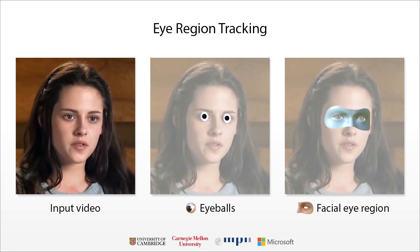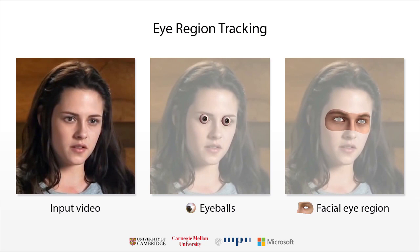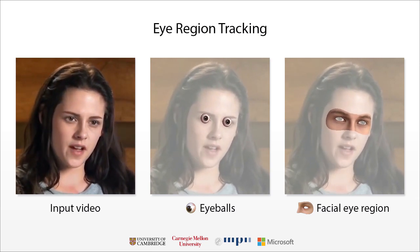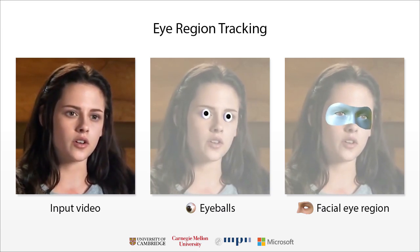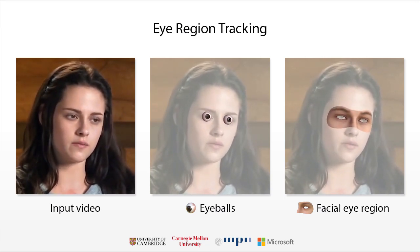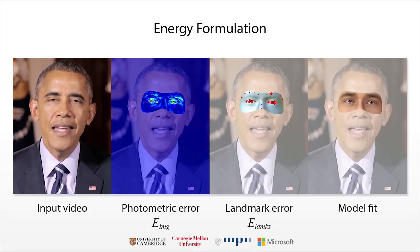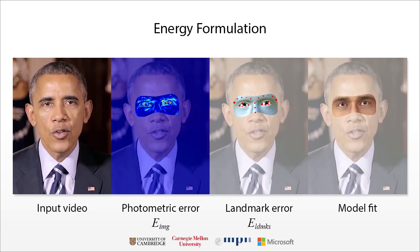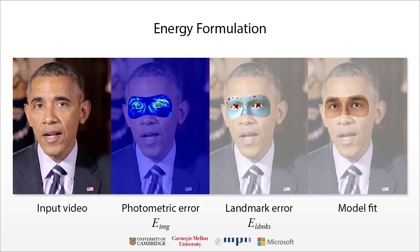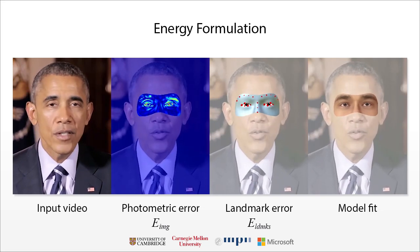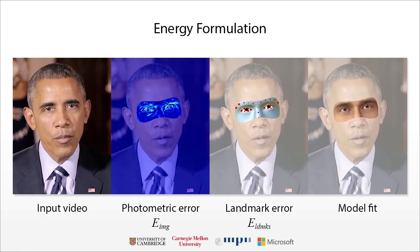For tracking, our system uses an articulated multi-part eye region model. While previous work has used similar models for the whole face, they have so far avoided the eyes. We model the face and eyeballs as separate parts that can move independently. We fit our model using analysis by synthesis, minimizing an energy function with Gauss-Newton optimization. Our energy includes a dense photometric error term that measures pixel-wise similarity, as well as a sparse landmark similarity term that prevents our model from drifting from reliably tracked facial feature points.